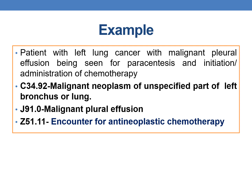Example: A patient with left lung cancer with malignant pleural effusion being seen for paracentesis and initiation of chemotherapy. The reason for visit is paracentesis, so malignancy is coded first: C34.91, malignant neoplasm of unspecified part of left bronchus or lung, followed by J91.0, malignant pleural effusion, then Z51.11, encounter for antineoplastic chemotherapy. Additionally, the tabular list for malignant pleural effusion J91.0 contains a 'code first the neoplasm' instruction, which is another reason the neoplasm is coded before J91.0.